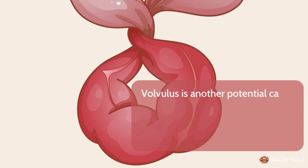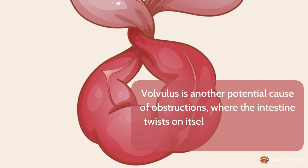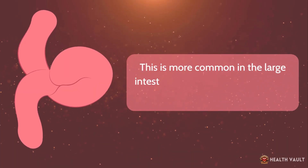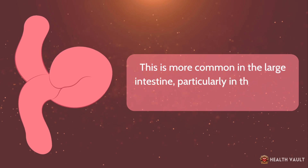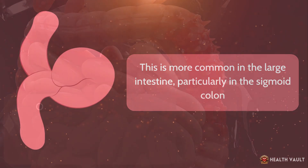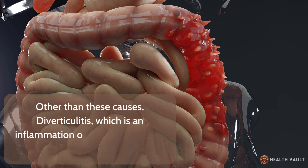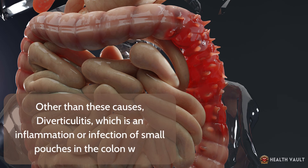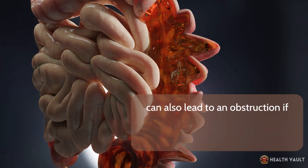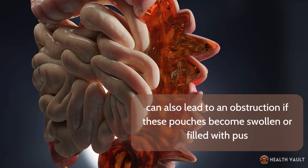Volvulus is another potential cause, where the intestine twists on itself, cutting off its own blood supply. This is more common in the large intestine, particularly in the sigmoid colon. Diverticulitis — an inflammation or infection of small pouches in the colon wall — can also lead to an obstruction if these pouches become swollen or filled with pus.